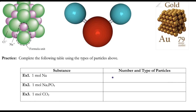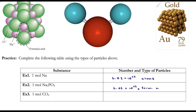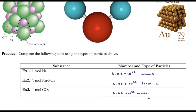Avogadro's number shows us just how huge the number of formula units, molecules, or atoms is going to be, because those particles are very small. Let's practice: if I have one mole of sodium all by itself, that gives me 6.02 × 10²³ atoms. If I have one mole of sodium phosphate — sodium is a metal, so with a polyatomic ion that's an ionic compound — I have 6.02 × 10²³ formula units (abbreviated 'form u'). If I have one mole of carbon dioxide, I have 6.02 × 10²³ molecules.